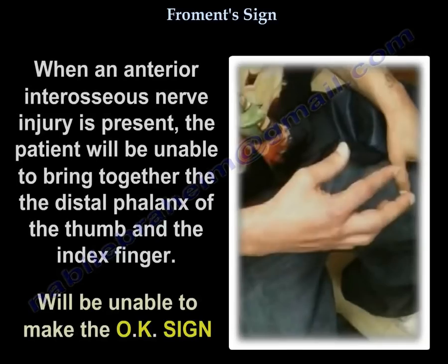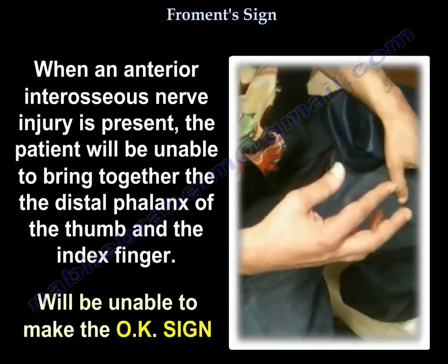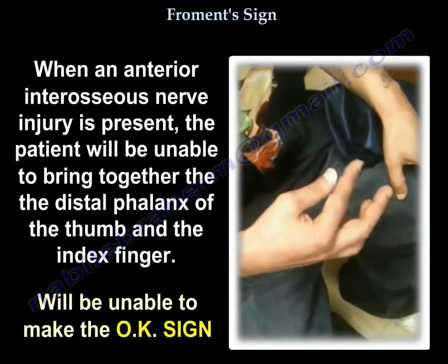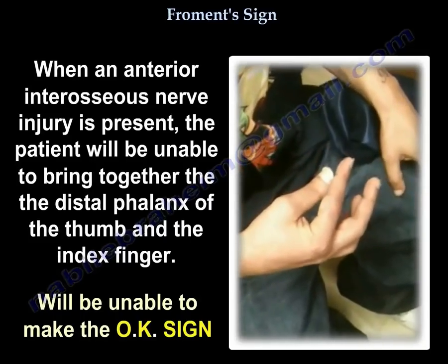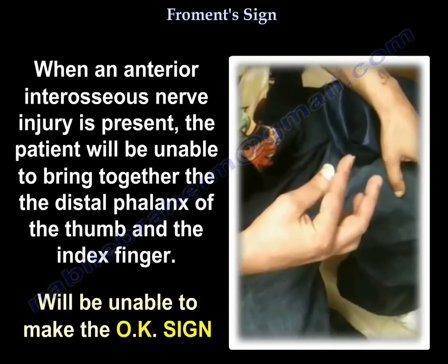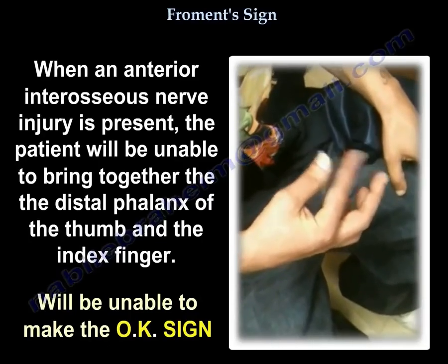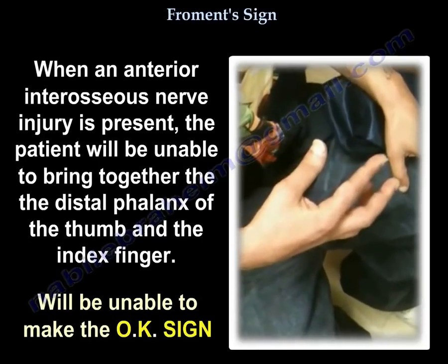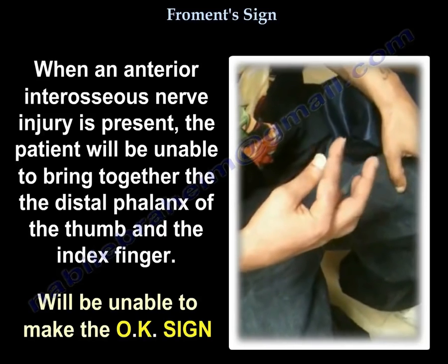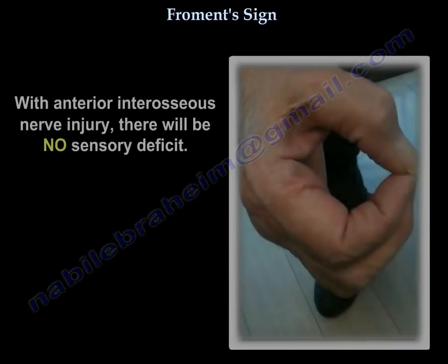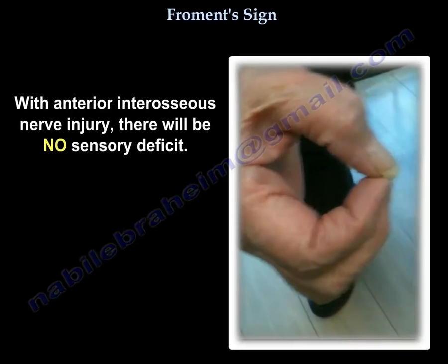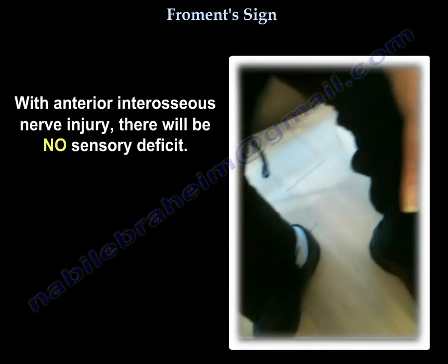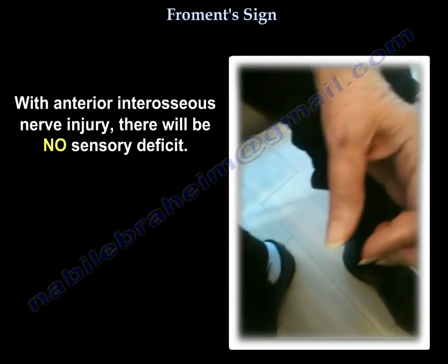When anterior interosseous nerve injury is present, the patient will be unable to bring together the distal phalanges of the thumb and index finger and will be unable to make the OK sign. Additionally, in anterior interosseous nerve injury, there will be no sensory deficit.